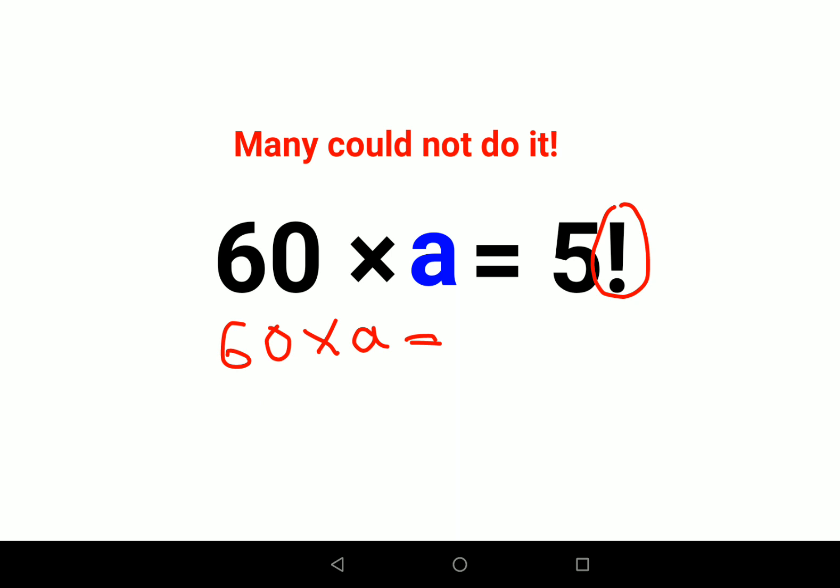What is a factorial? You start from that number and multiply it in descending order until you reach 1. So it is 5 × 4 × 3 × 2 × 1. Now, in order to find the value of a...